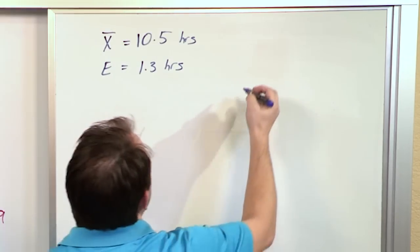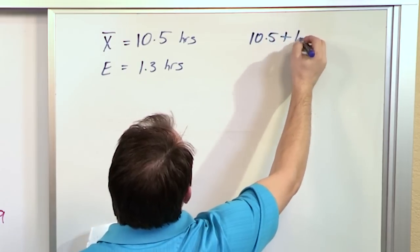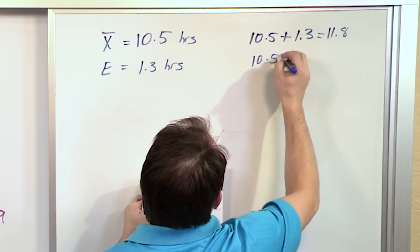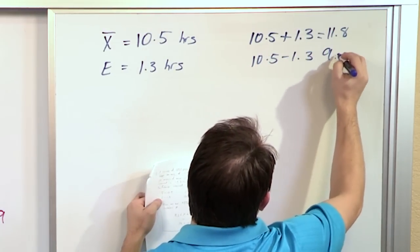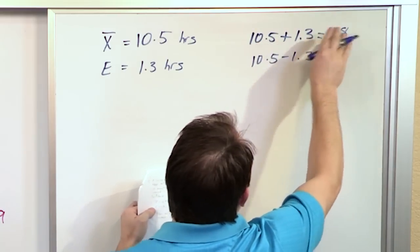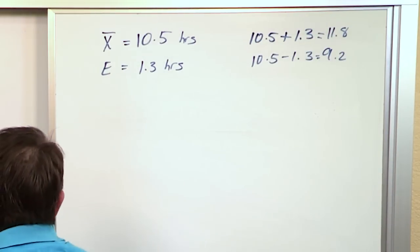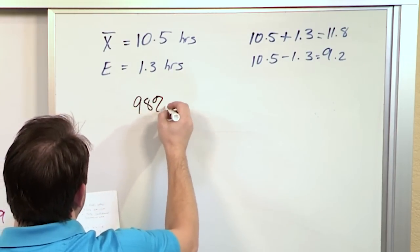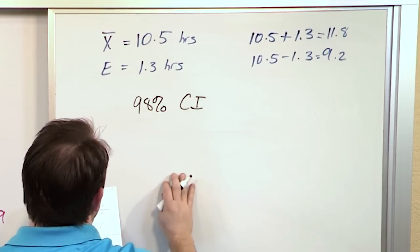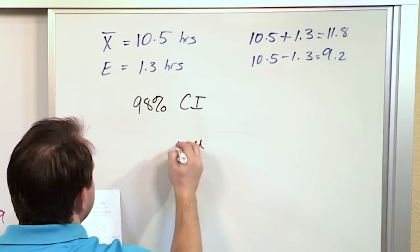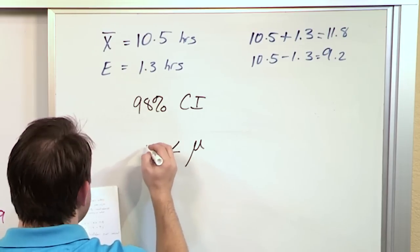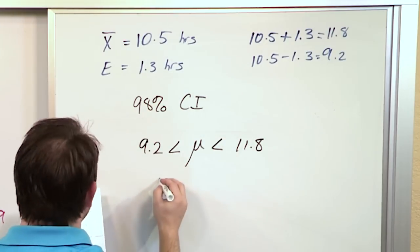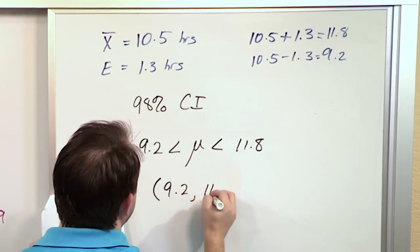So all you really have to do is say, okay, well, 10.5 plus 1.3 is 11.8, and 10.5 minus 1.3 is 9.2. You go plus one margin of error and minus a margin of error. To write that down, you can say we have a 98% confidence interval that the population mean is going to be greater than 9.2 and less than 11.8. Or if you want to write it more as an interval, 9.2 comma 11.8.